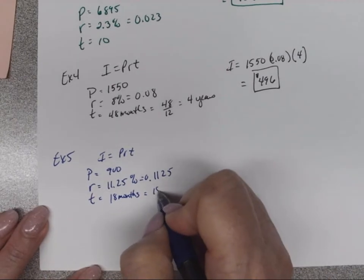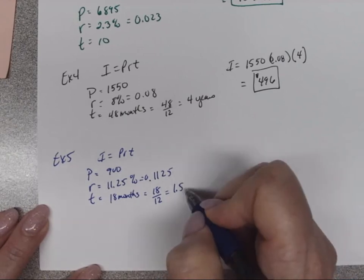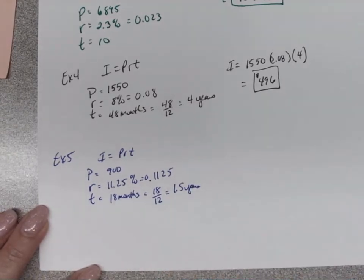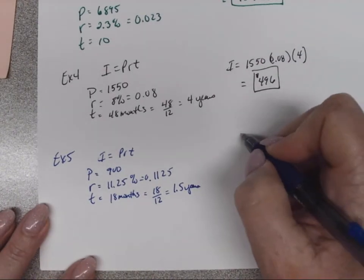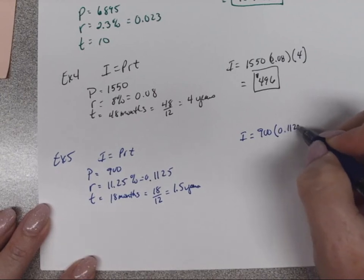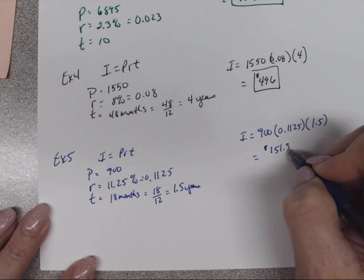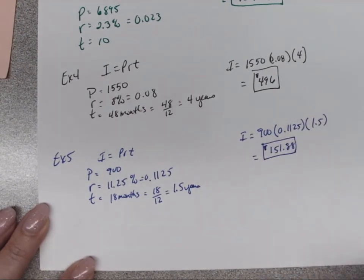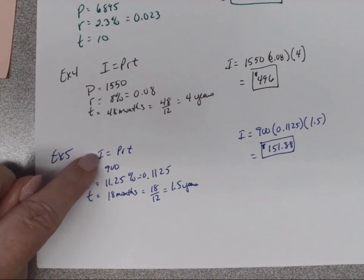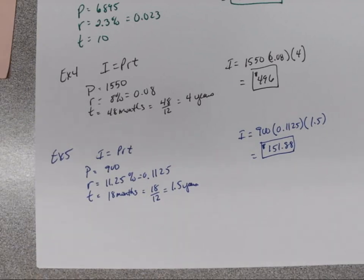Now, remember, we have to take that 18 and divide it by 12, and we'll get 1.5 years. Because it's got to be in years. So our I will be equal to 900 times 0.1125 times 1.5. And that will equal $151.88. So this is simple interest because it has a simple formula, and you can figure out the problem simply. There's a little bit more complication if it is months. But this is a simple interest formula.